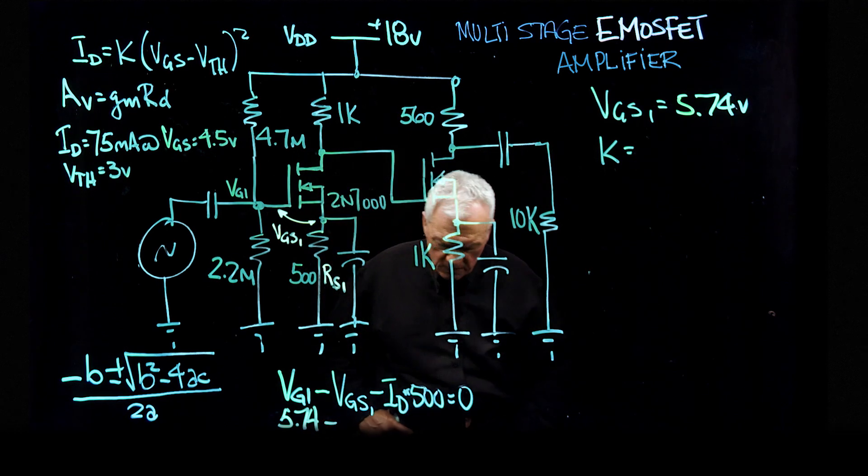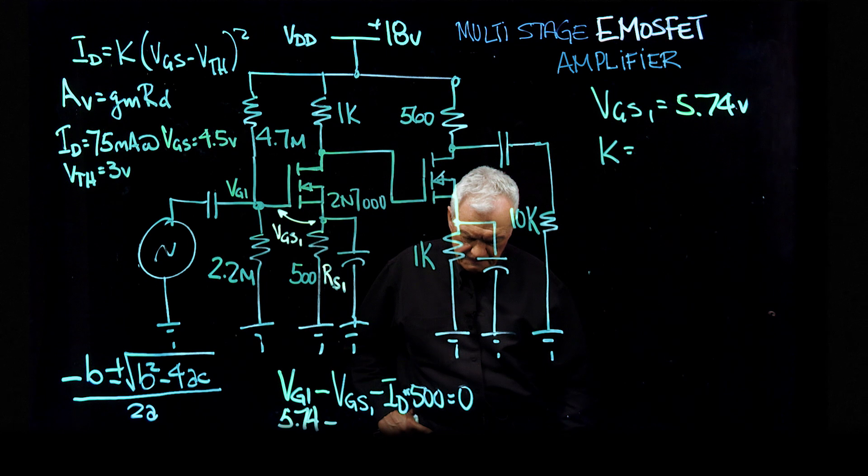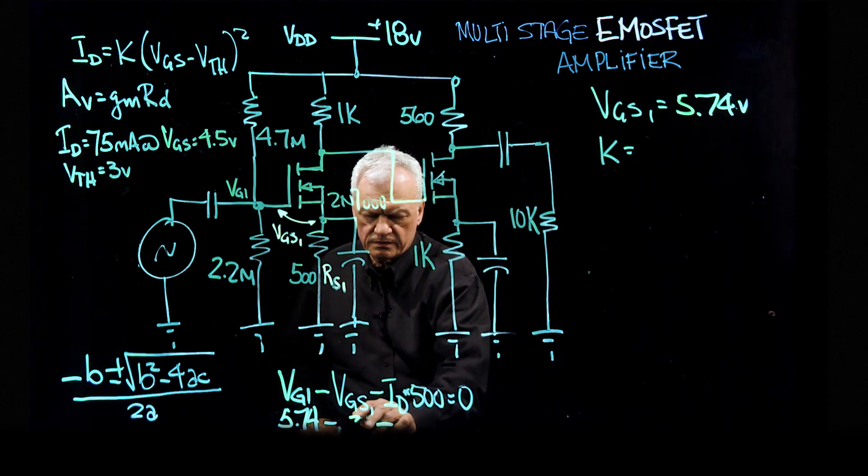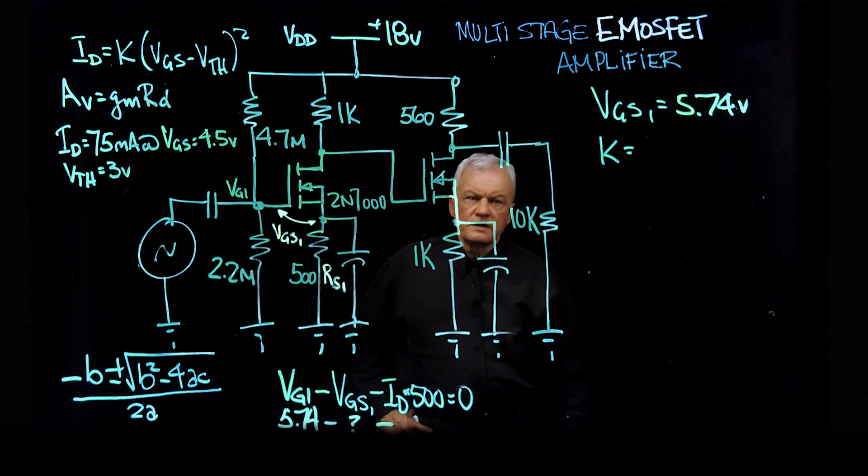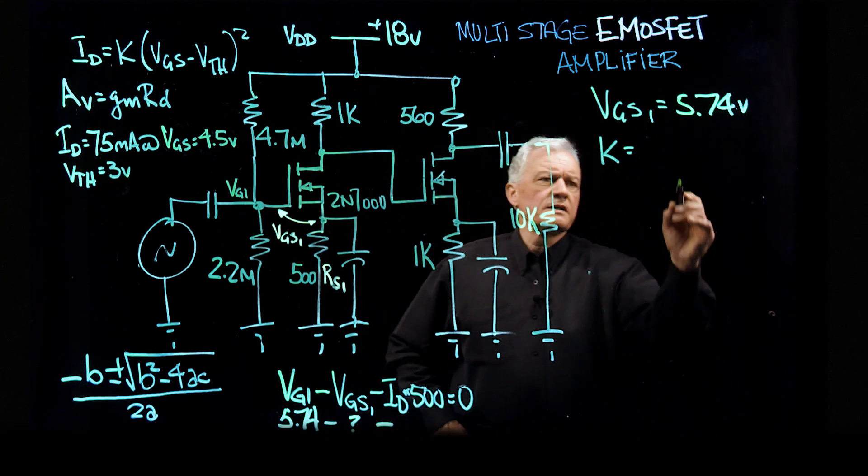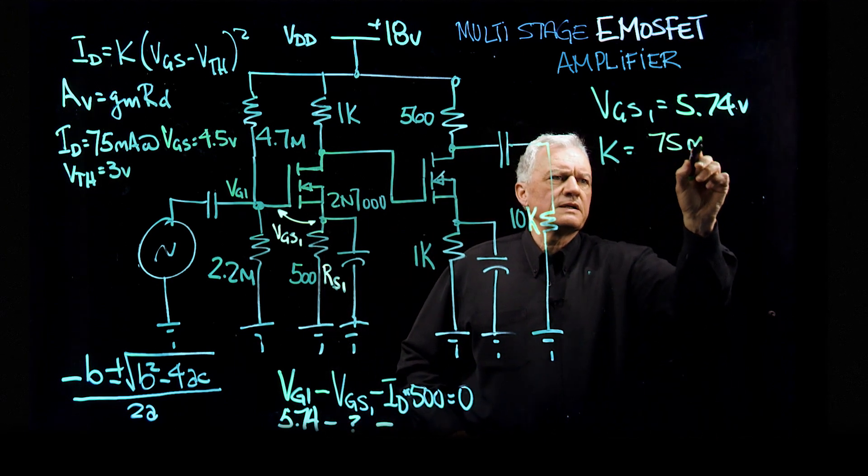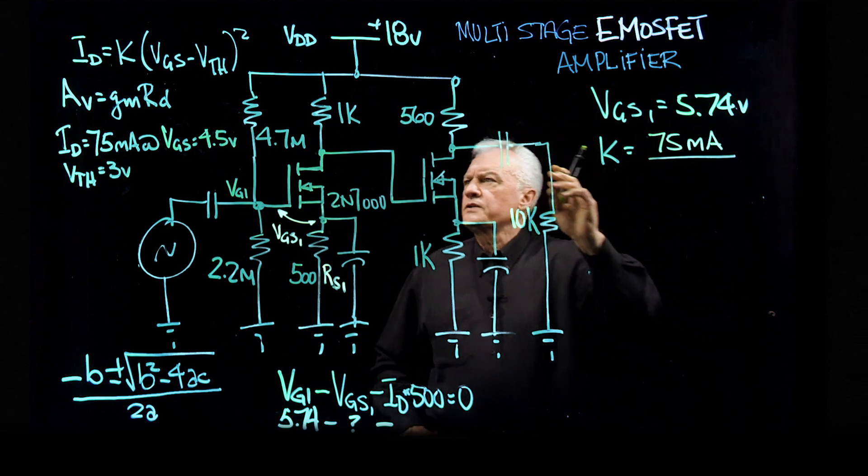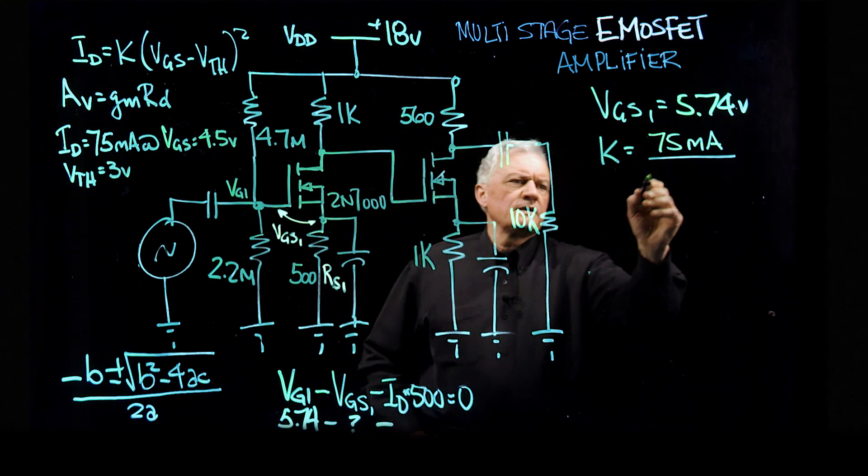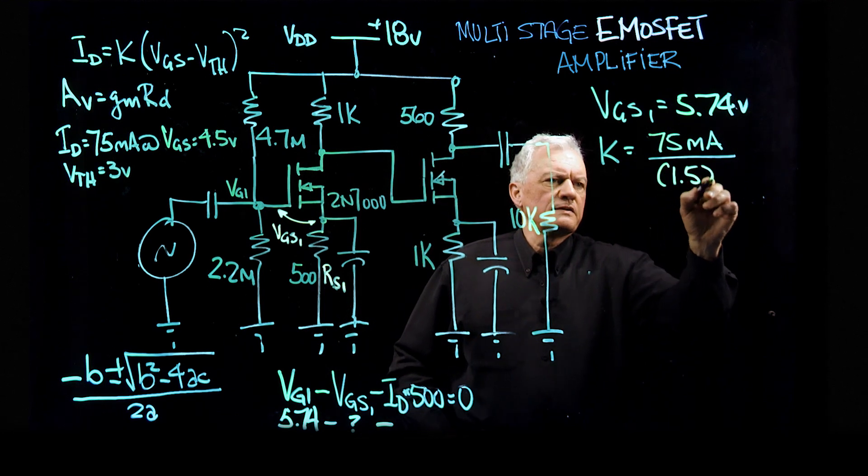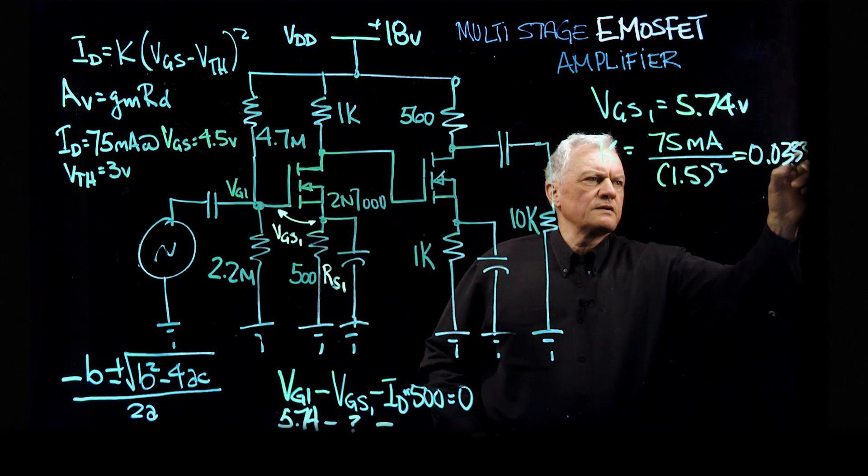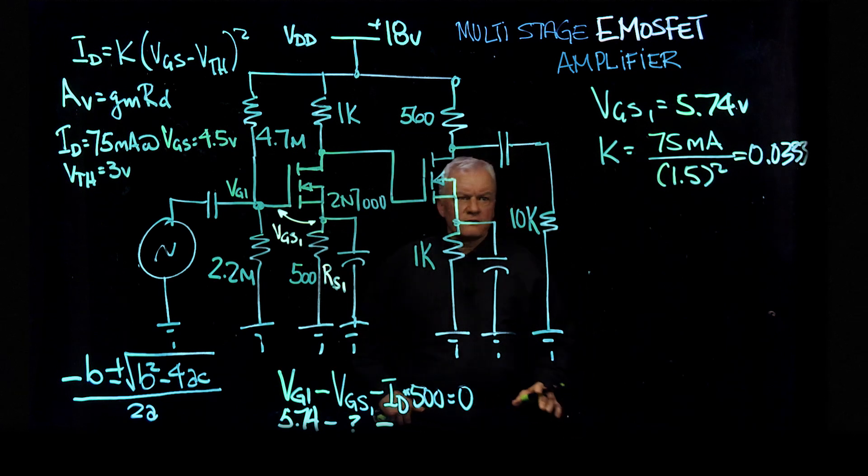We got VGS1, which we're going to try and calculate in a second. We have to try and calculate ID, because we've calculated K as, from the data sheet, 75 milliamps divided by, so V gate source from the data sheet was 4.5, V threshold is 3. That's basically 1.5 squared. And that comes out to 0.0333. So that's the math for that.